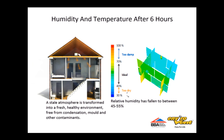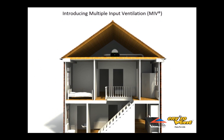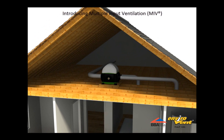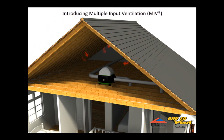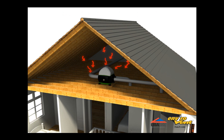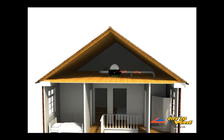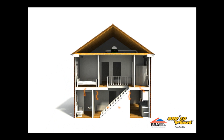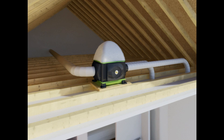Another strategy is known as multiple input ventilation. As you can see from this animation, the loft unit is picking up free energy from the loft space, filtering the air and delivering it into the property through multiple ceiling diffusers. The advantage of using multiple inputs is that you can target certain areas of the home where there may be a condensation or mould problem, or perhaps there may be a person suffering from hay fever or asthma.